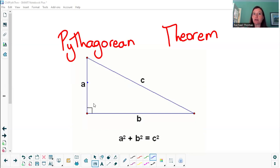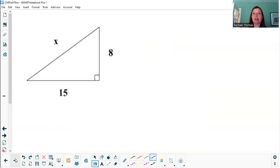Context here is that we're talking about right triangles, the side lengths of right triangles, and we can use this theorem to help us find missing sides.